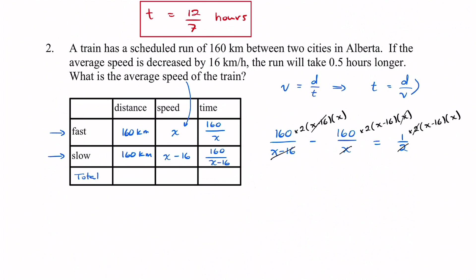Simplifying what we got. In the first one we got 160 times 2, that's going to be 320. And then times it by this x. So we're going to have 320x. And then we got minus. And then with this one there's a lot more going on. We're going to have 160 times 2. Let's do just that part first. So we're going to have negative 320.